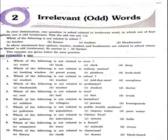Ninth question: which of the following is not related to a forest? Options are computer, trees, animals, rivers. The right answer is computer.